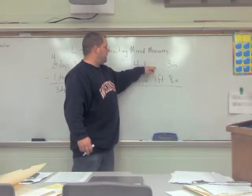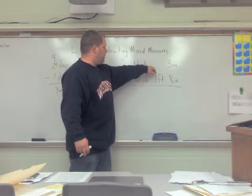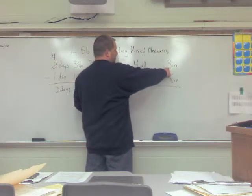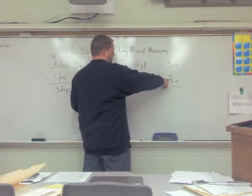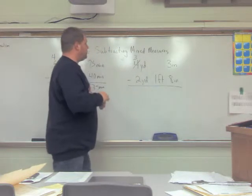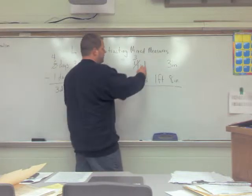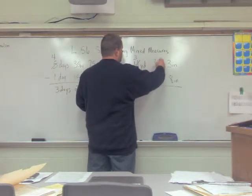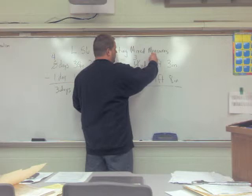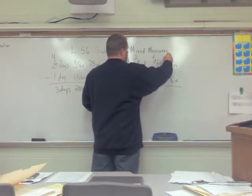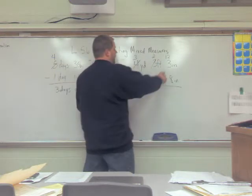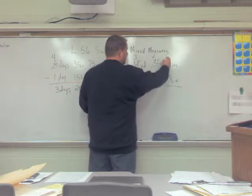You'll see here that there is a blank space where we have to take one foot away from a measurement, which we will have to regroup from. We have to do that first before we can do anything with the inches, since we're taking eight from three inches. So we're going to borrow from the yards — the conversion for yards is three feet per yard — so we can put three feet over here. We then take one foot from here, leaving us with two, and add 12 inches to the three inches we have, making a total of 15 inches.